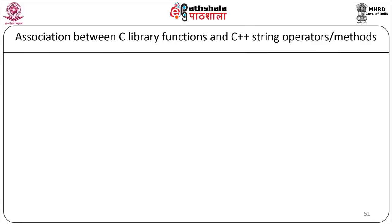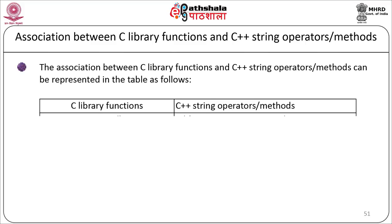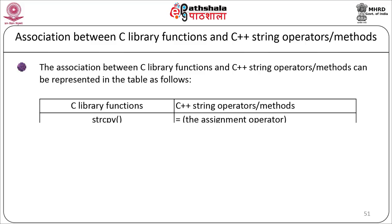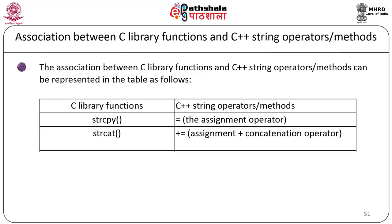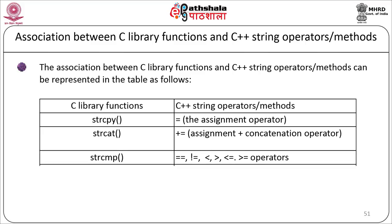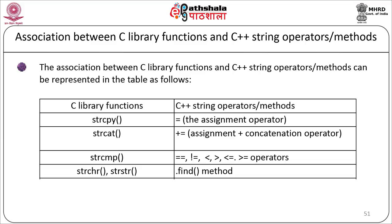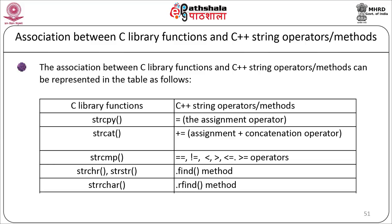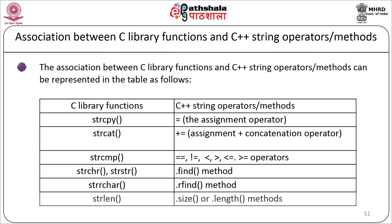The association between C library functions and C++ string operators or methods: strcpy corresponds to the = operator; strcat corresponds to +=; strcmp corresponds to ==, !=, <, >, <=, >=; strstr corresponds to the .find() method; strchr corresponds to the .rfind() method; and strlen corresponds to the .length() or .size() method.